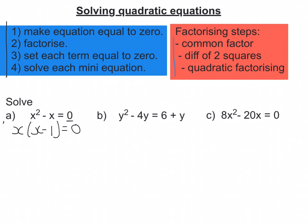So now I'll set each term equal to zero, so that means we're going to have x = 0 and x - 1 = 0. And now solve each mini-equation. Well, the first one's already solved, x can be zero. But to solve the second one, I must add one to each side to get x on its own, and I get x = 1. So my answer to the first one is x = 0 and x = 1.